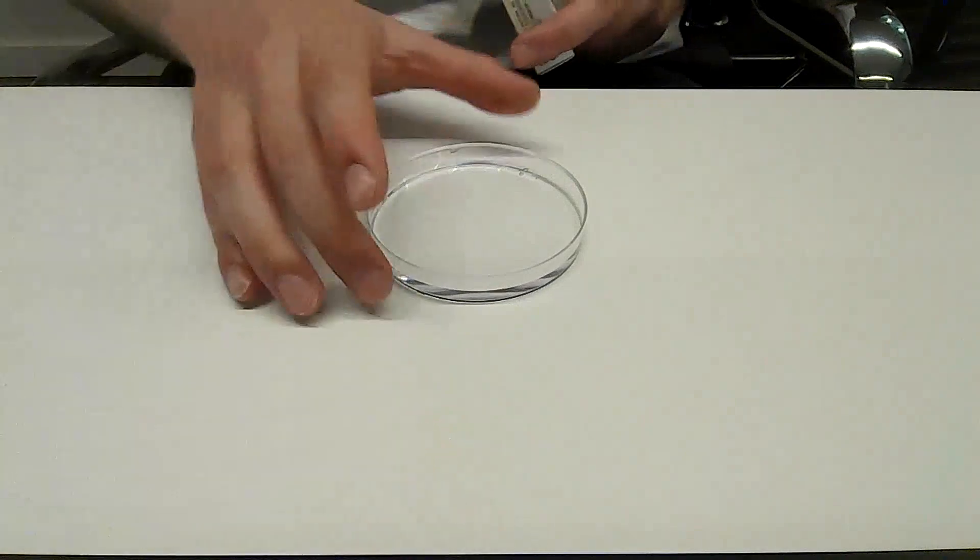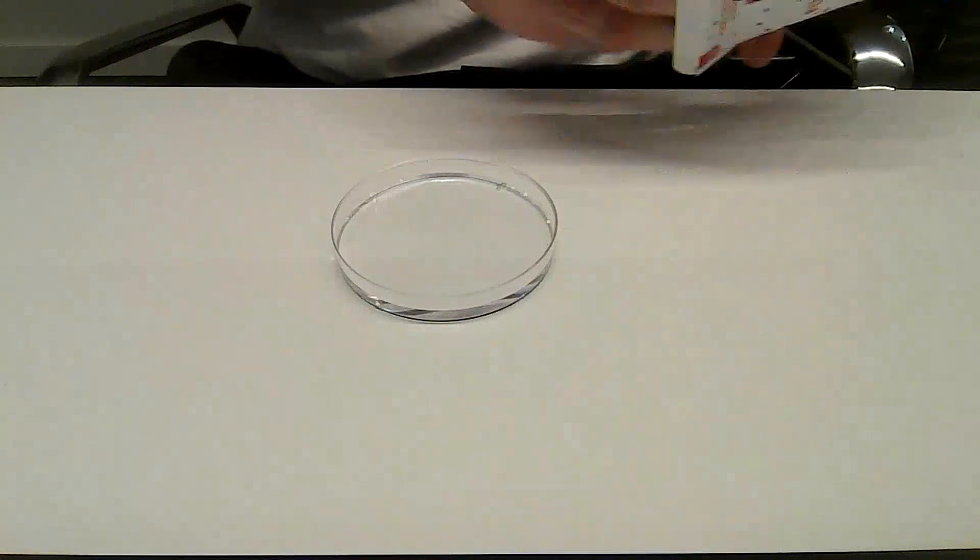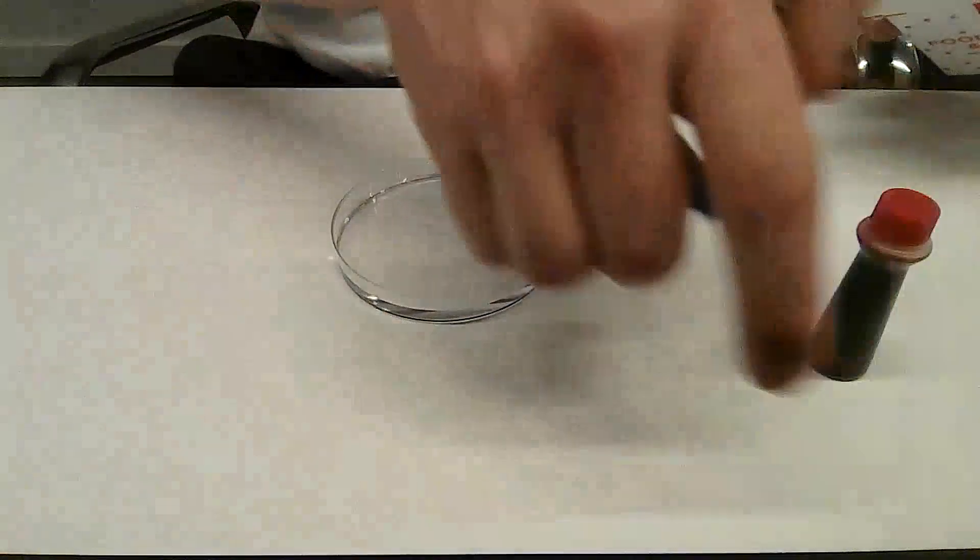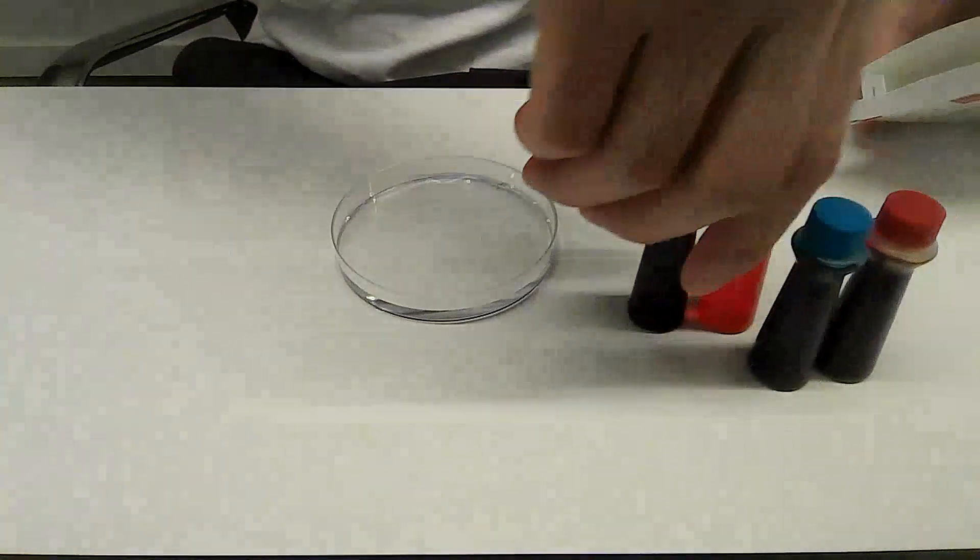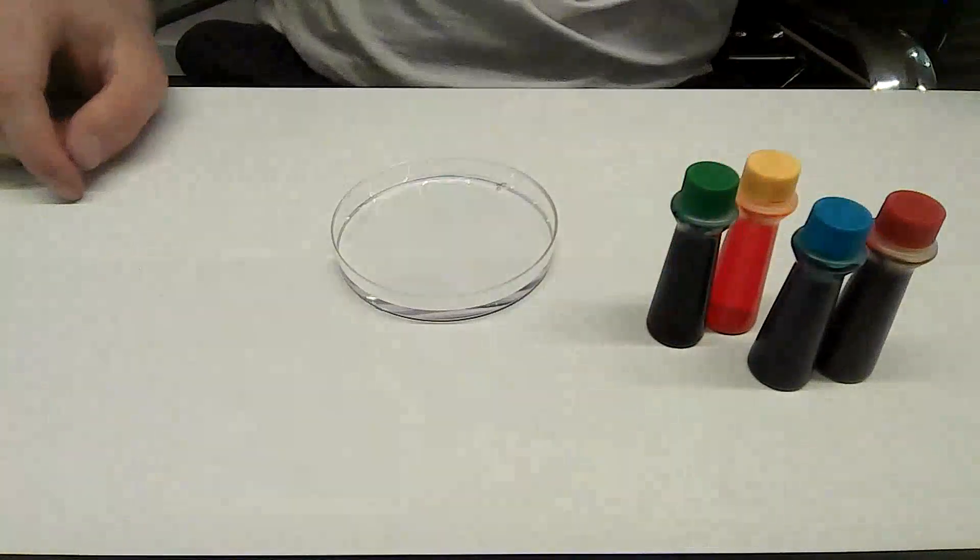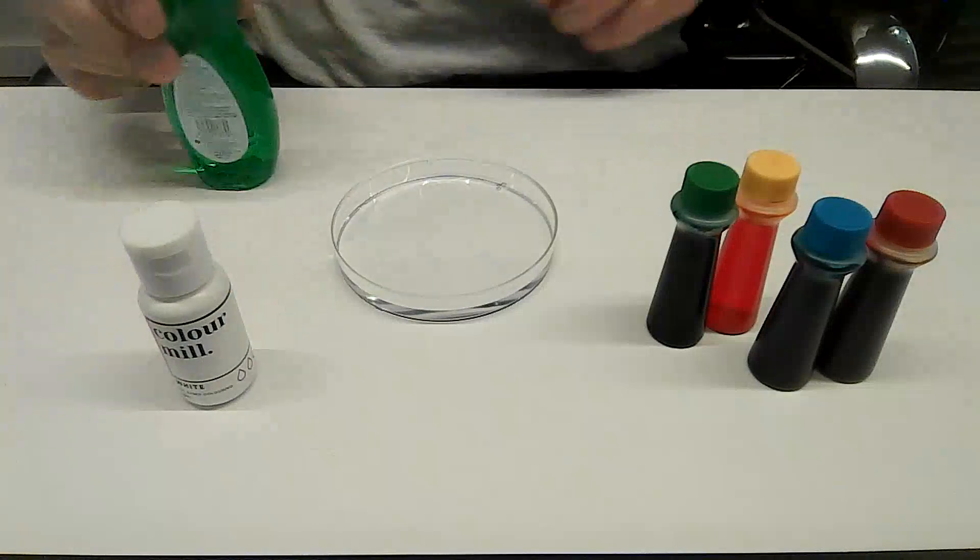So first off, we'll go through all the parts. This is the petri dish, the food dye, four different colors, white food coloring and soap.